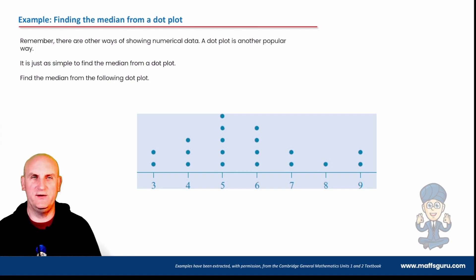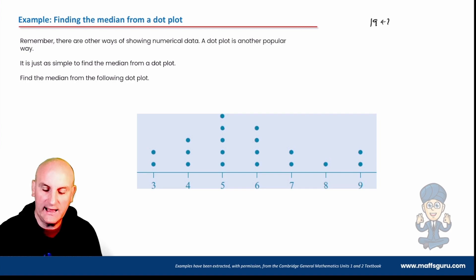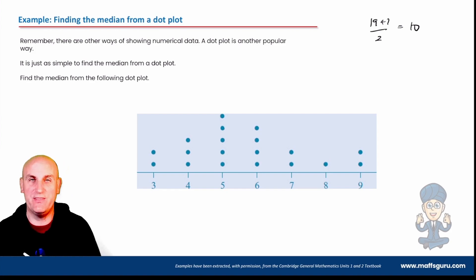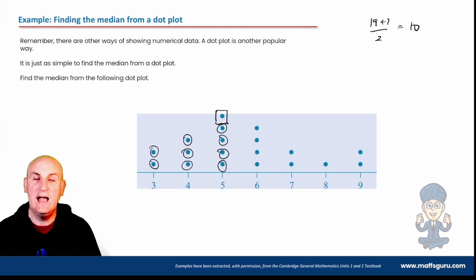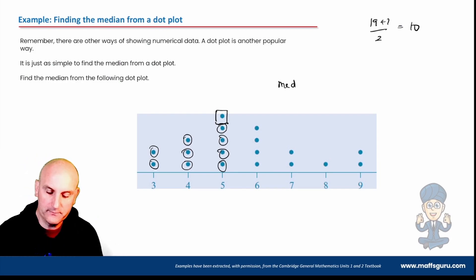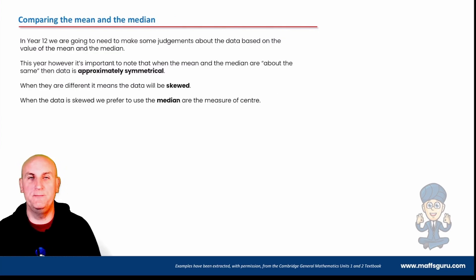Finding the median from a dot plot works exactly the same way — dots just represent numbers. Counting the dots: there are 19 numbers. Using (19 + 1) ÷ 2 = 10, the median is in the 10th position. Counting to the 10th dot lands in the column at value 5, so the median equals 5.